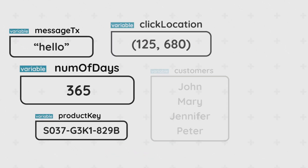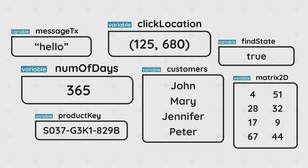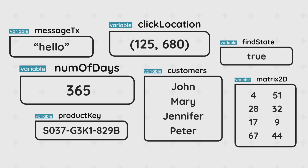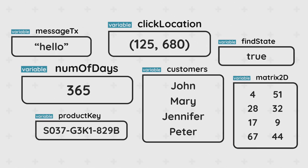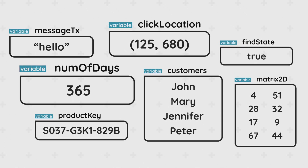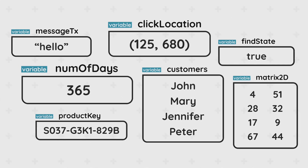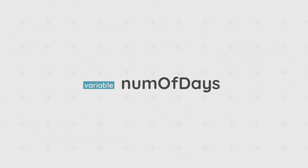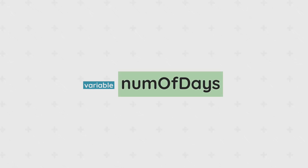Starting off with variables — variables are objects used to store or hold information. This information could be a number, a text, a list of things, or anything really.